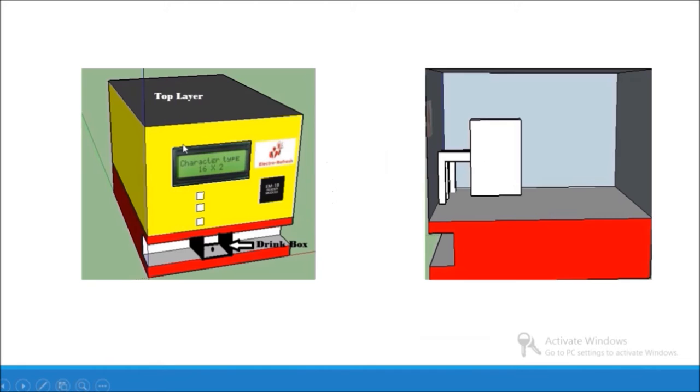So let's move towards the hardware. These are the diagrams from Google SketchUp. This is our front panel. Here we are having a 16x2 character type LCD, then EM18 module, three buttons to select drinks, and the drink box.